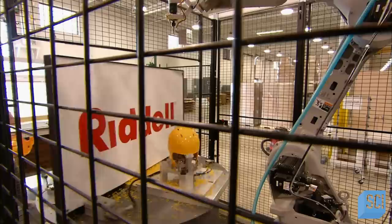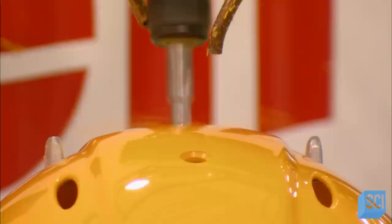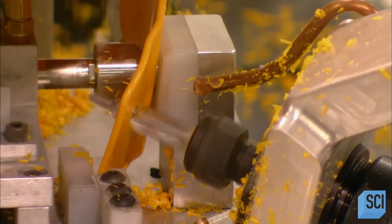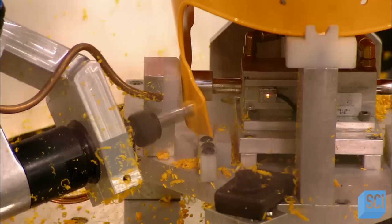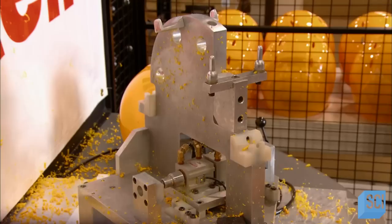Next, a robot drills up to nine holes in the shell. The holes will be used to attach a liner, face guard, and various pieces of hardware. This robot works far more quickly than a human can, performing all the drilling in just 30 seconds. This is the ultimate in computerized precision. A worker collects the drilled shell and moves a new one into position for the robot.